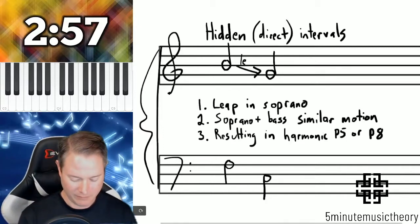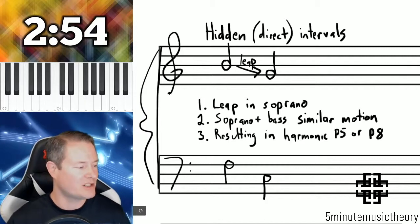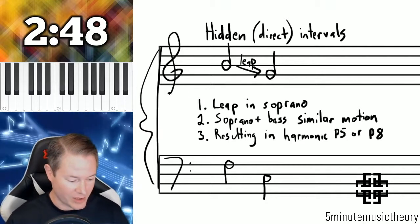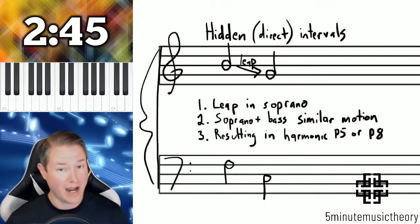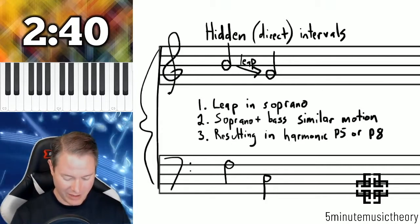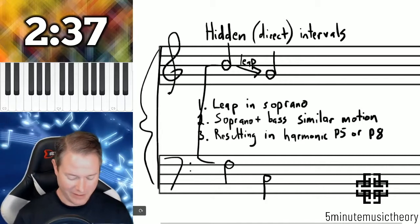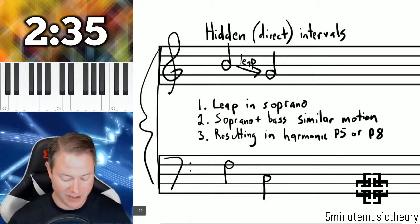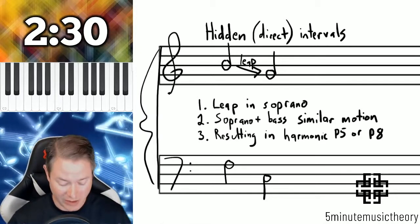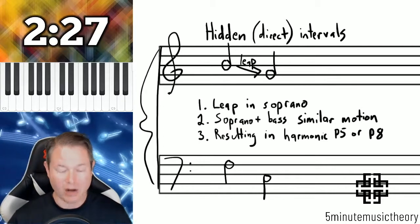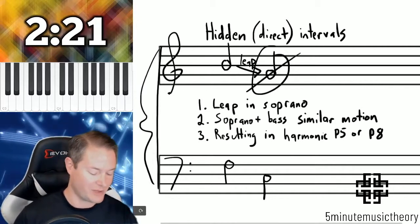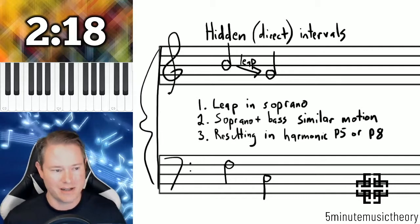There's the leap — from my terminology, a leap means anything larger than a step. Sometimes you'll see skip or leap, but really it's when there's anything larger than a step that we have to worry about. So we do have that happening in the soprano. The soprano and bass need to move in similar motion, and they are moving in the same direction — the first interval is a fourth moving into a fifth. So they are moving in similar motion. The resulting interval is a harmonic perfect fifth. So here's the error — that's a direct interval and you would get a nice red slash through that if you were turning that in on an assignment.